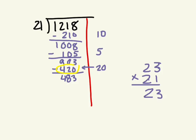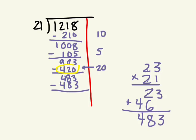3 times 2? 6. 2 times 2? 4. Add them together. 6 plus 2 is 8. And we have 483. And we have 483. Anything left over? No. No.